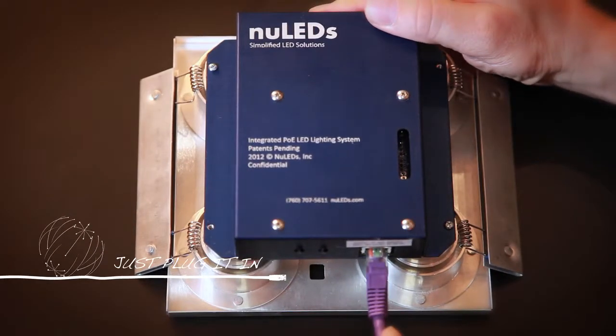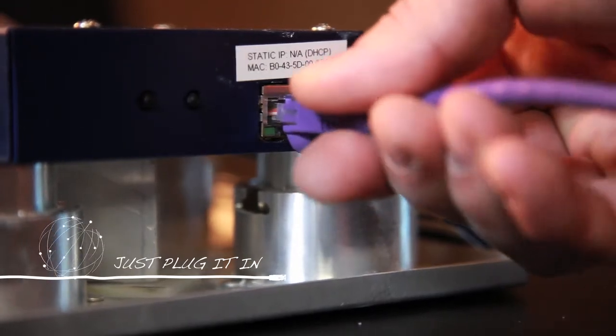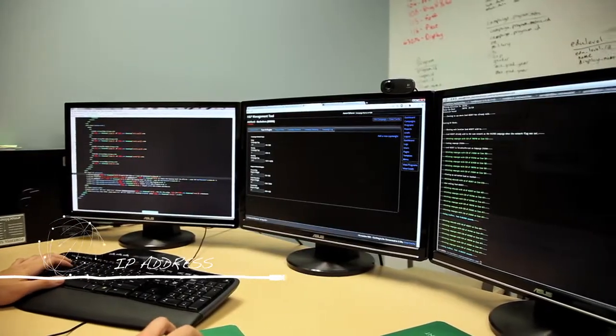You plug it in with a cat5 cable like you would plug in the back of your computer, and the lights come on. All of a sudden it has an IP address, you can find it, and you can control the lights.